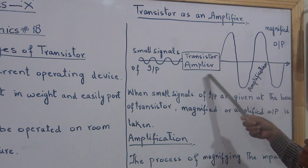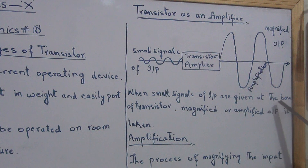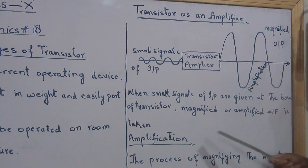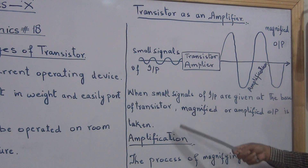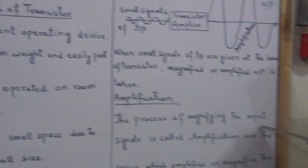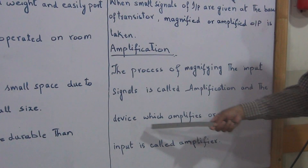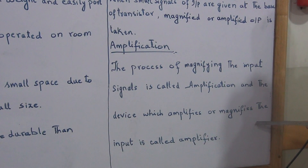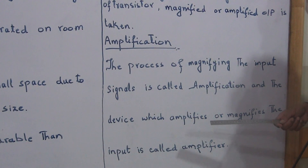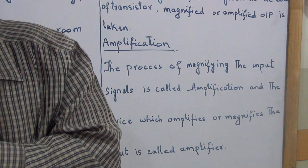When small signals of input are given at the base of the transistor, magnified or amplified output is taken from the collector. The process of magnifying the input signals is called amplification, and the device that amplifies or magnifies the input is called an amplifier. Only one topic is left; in the next class, we will study about the next topic. Thank you.